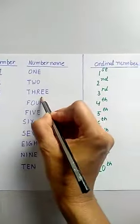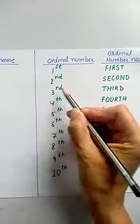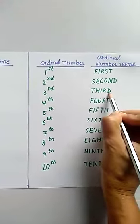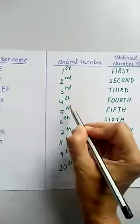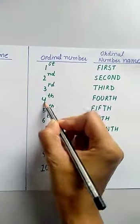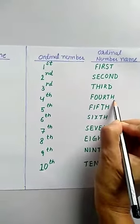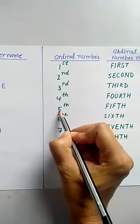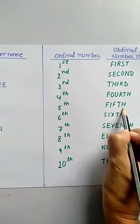Number 3 will be written as third, T-H-I-R-D, third. Number 4 is fourth, F-O-U-R-T-H, fourth. Number 5 is fifth, F-I-F-T-H, fifth.